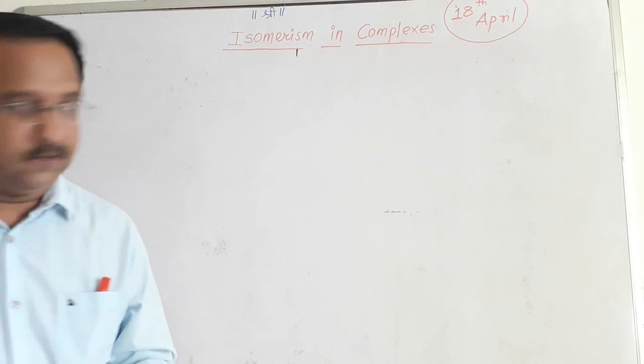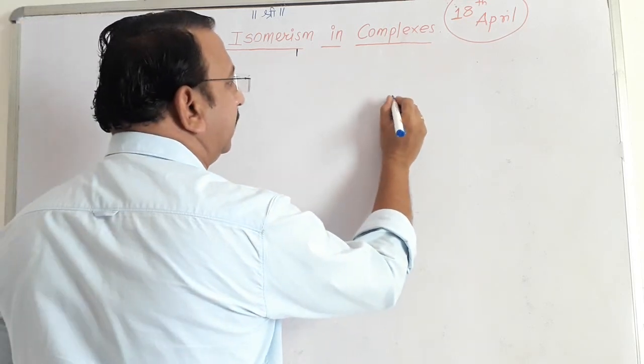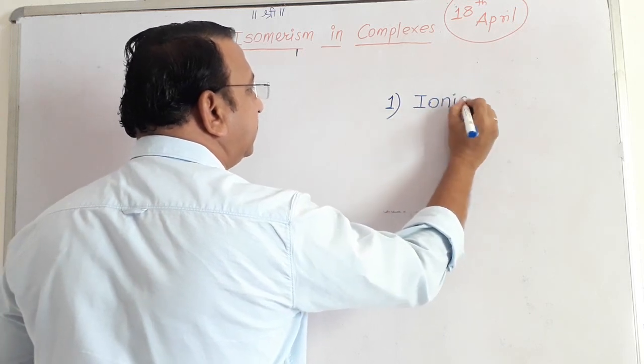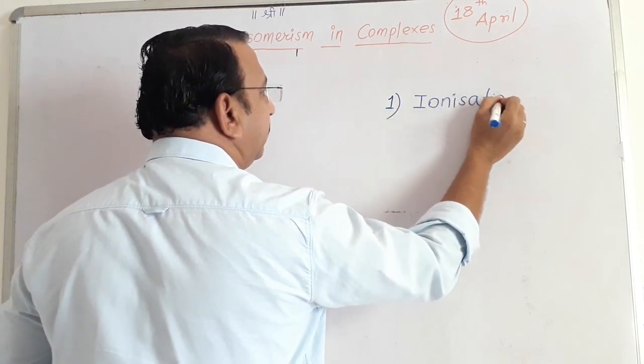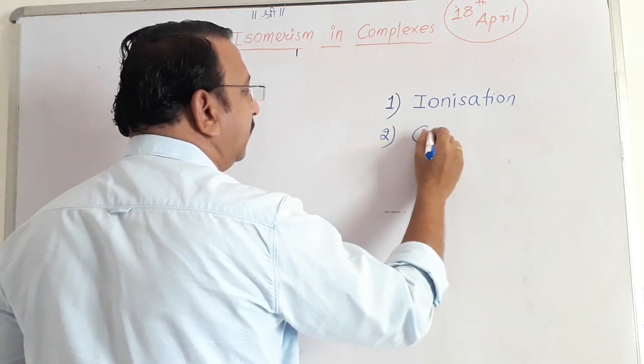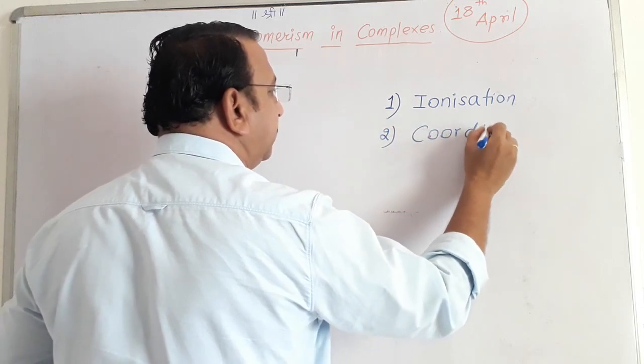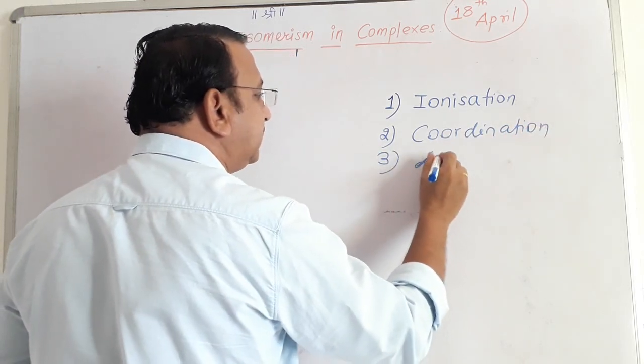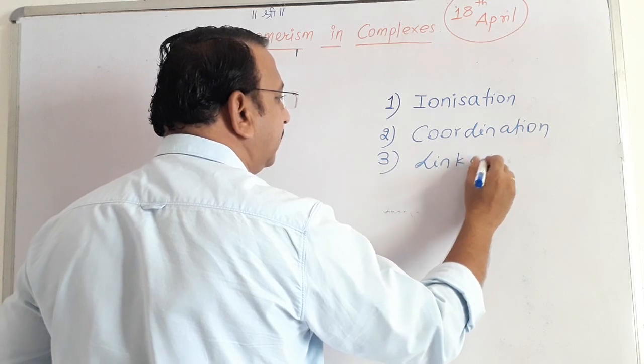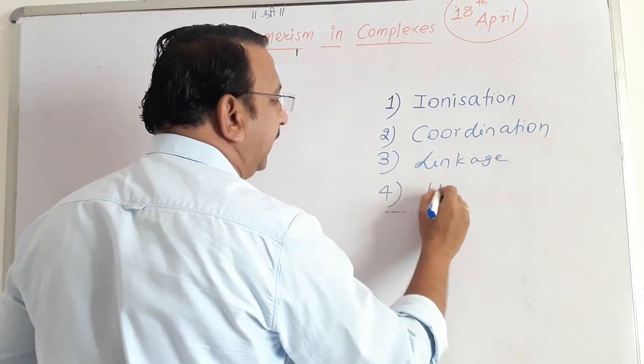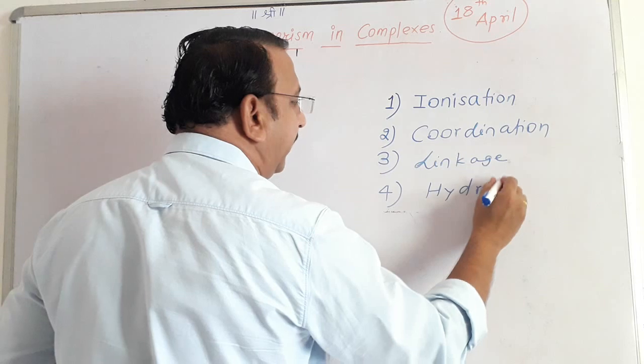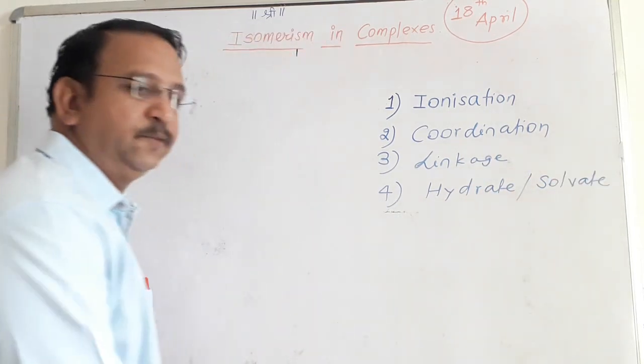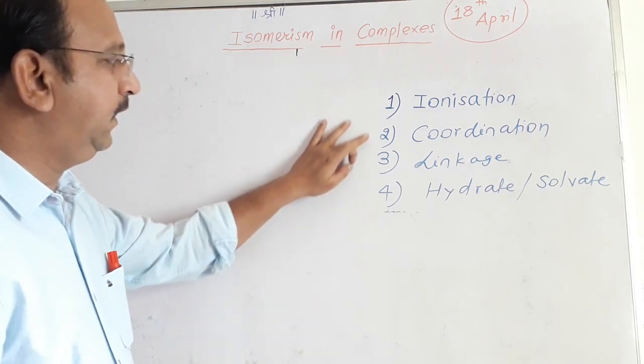First one is called ionization isomerism. Second one is called coordination isomerism. Third one is called linkage isomerism. And fourth one is called hydrate isomerism or solvate isomerism, also called solvent isomerism. We are going to take them one by one.